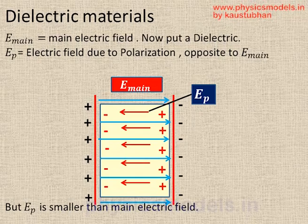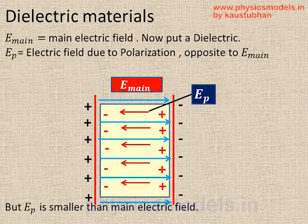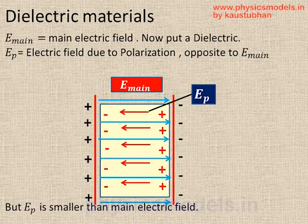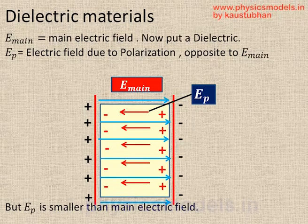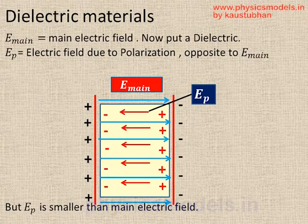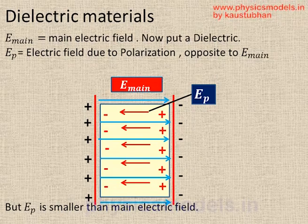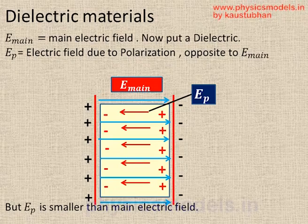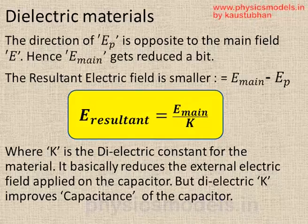Therefore, as far as we are concerned as an observer looking at the capacitor as a whole, the resultant electric field in the capacitor will be E_main minus E_P. That means the blue arrows minus the red arrows going in the opposite direction. So the net resultant electric field is the most important, and that leads to the dielectric constant.